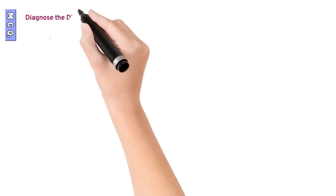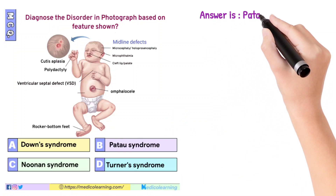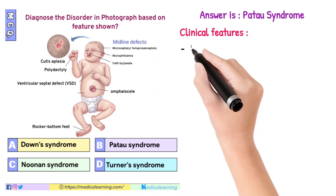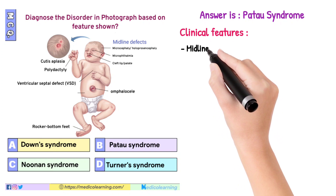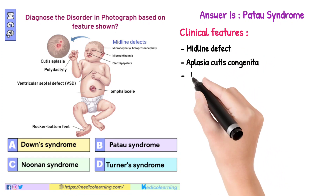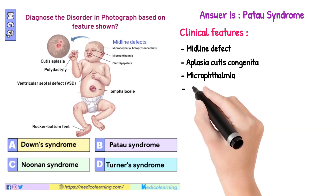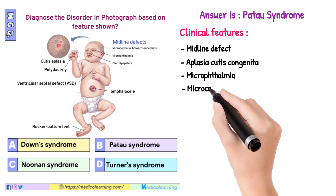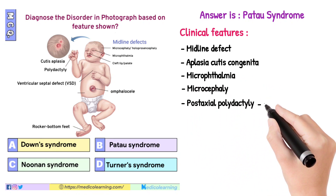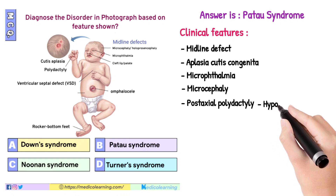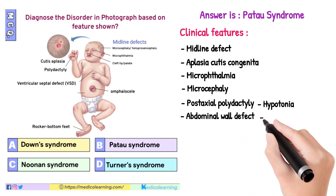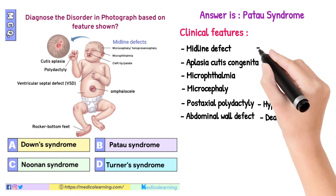In this question, the answer is Patau syndrome. Clinical features include: midline defect, aplasia cutis congenita, microphthalmia, microcephaly, postaxial polydactyly, hypotonia, holoprosencephaly, hypoplastic or absent ribs, abdominal wall defect, deafness, colobomas, capillary hemangioma, genital anomalies, and clenched fist.